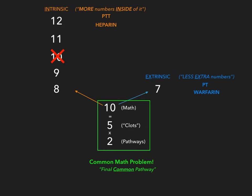This is the coagulation cascade. In summary, it is extremely high yield — you have to know it. They're going to ask you about it on your boards and will likely ask about heparin and warfarin, bleeding, clotting, all that stuff. Know this and know it well. Good luck.